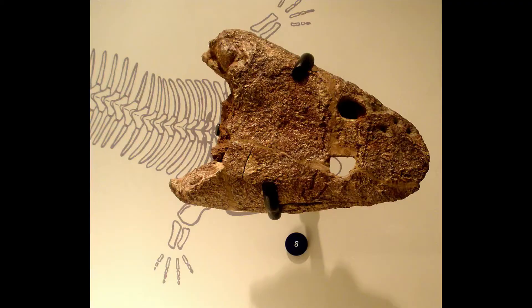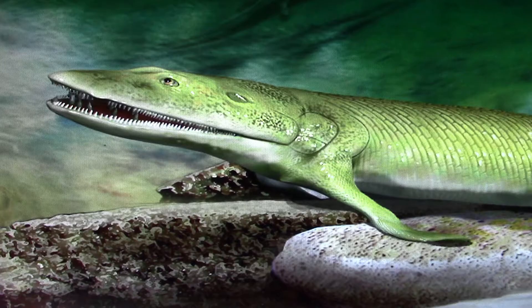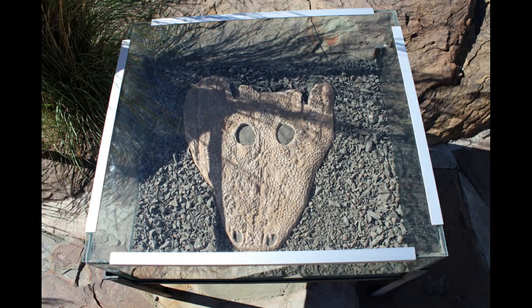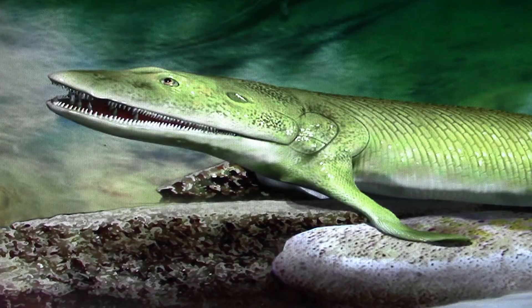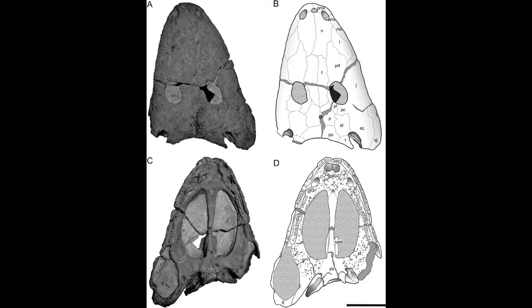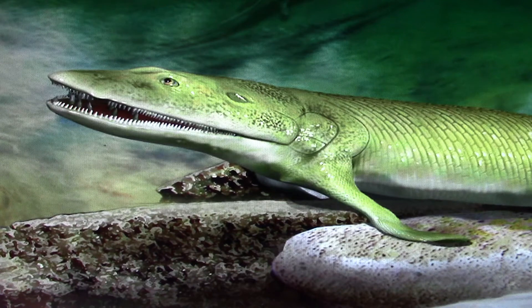Rhynosuchus, 270 million years ago; a second Rhynosuchus species, 256 million years ago; and Bromoistega, 250 million years ago.